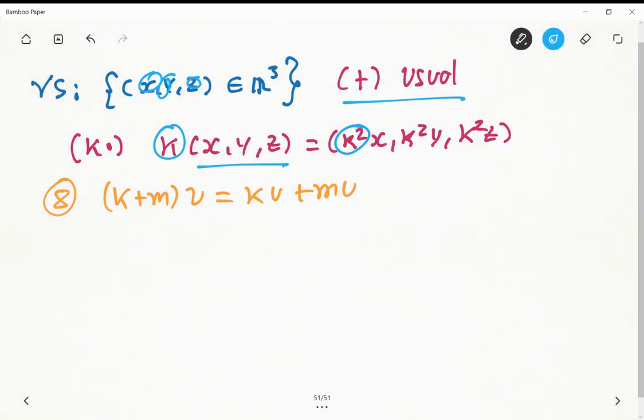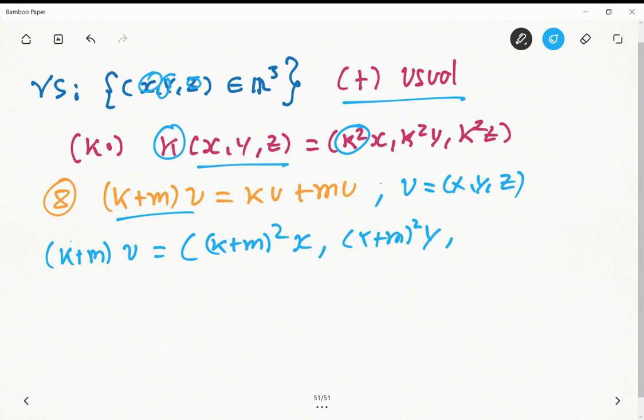So let's see what happens with the left-hand side of this equality. So k plus m times the vector u that I'm going to define as x, y, and z. This is going to be equals to k plus m squared x, k plus m squared y, and k plus m squared z.